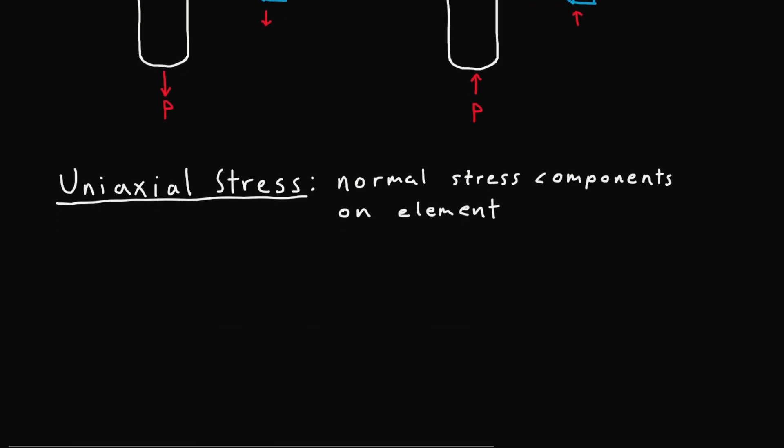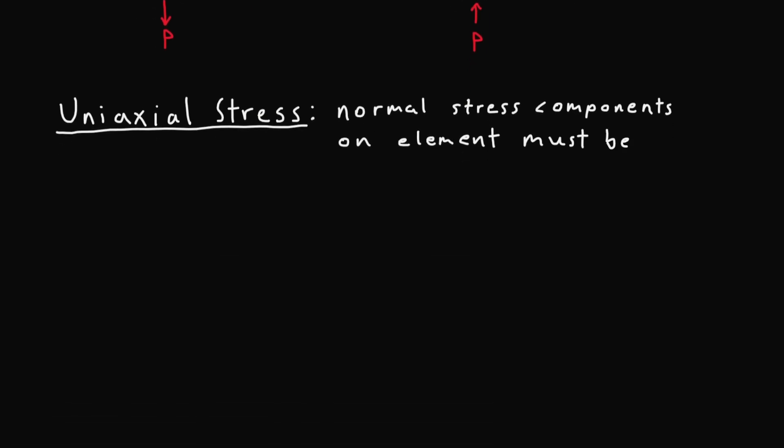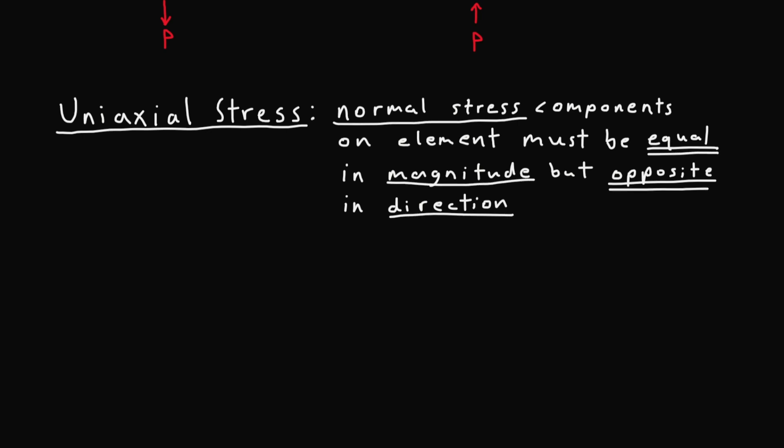Whenever material is subjected to this type of stress, the normal stress components on an element just like the one I drew above must be equal in magnitude but opposite in direction. This is of course in order to uphold static equilibrium. So again the normal stress components must be equal in magnitude but opposite in direction.